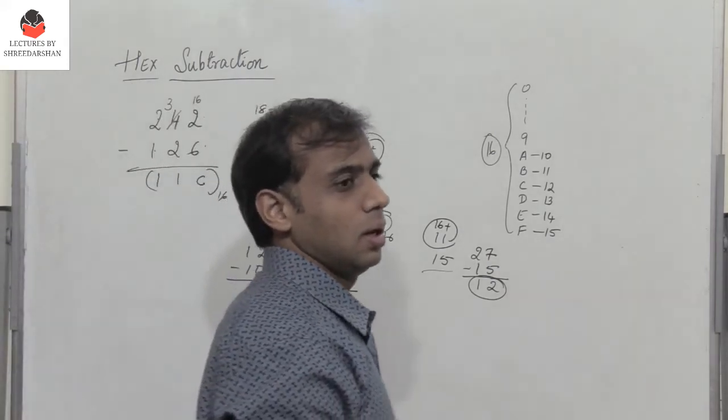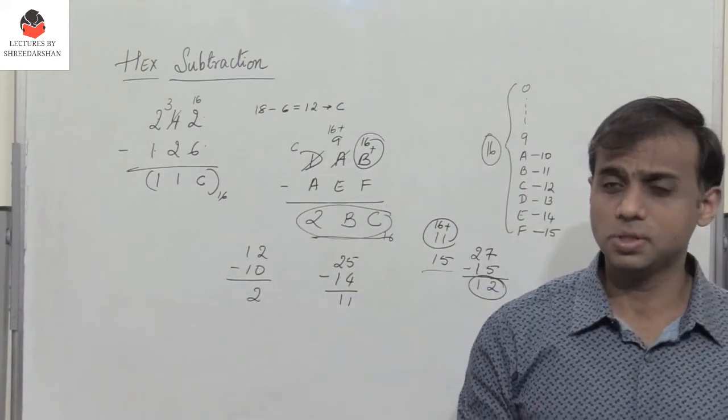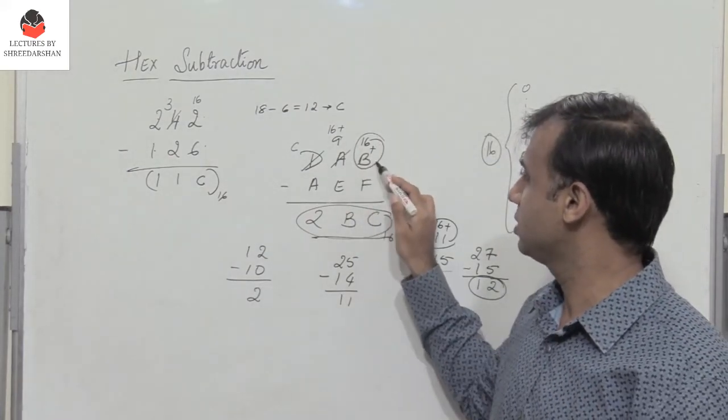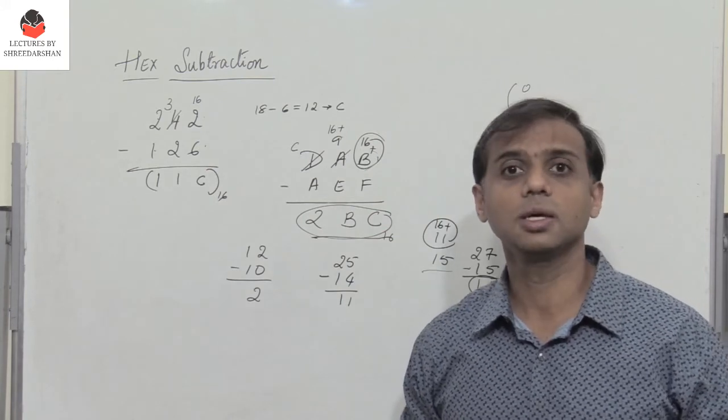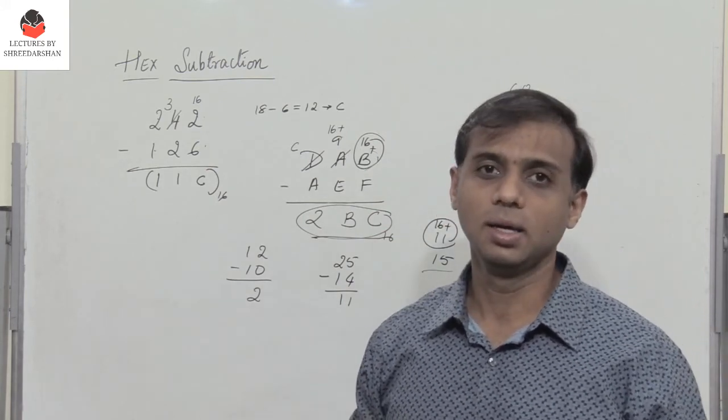It's very simple. Hex subtraction is straightforward. When you borrow, you just have to remember to add 16 to the given number and then perform subtraction. In the next video segment, we'll see how to multiply two hex numbers.